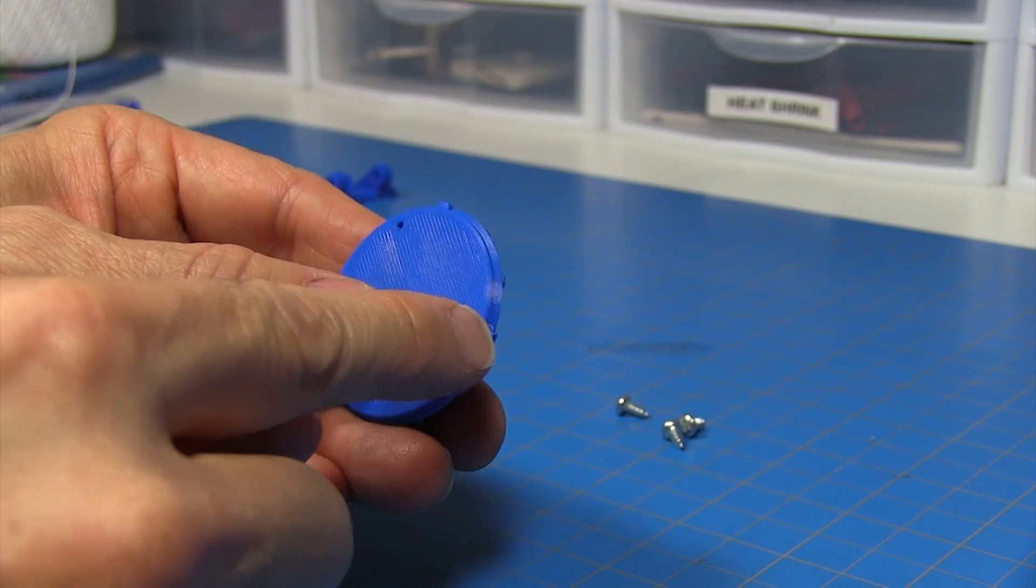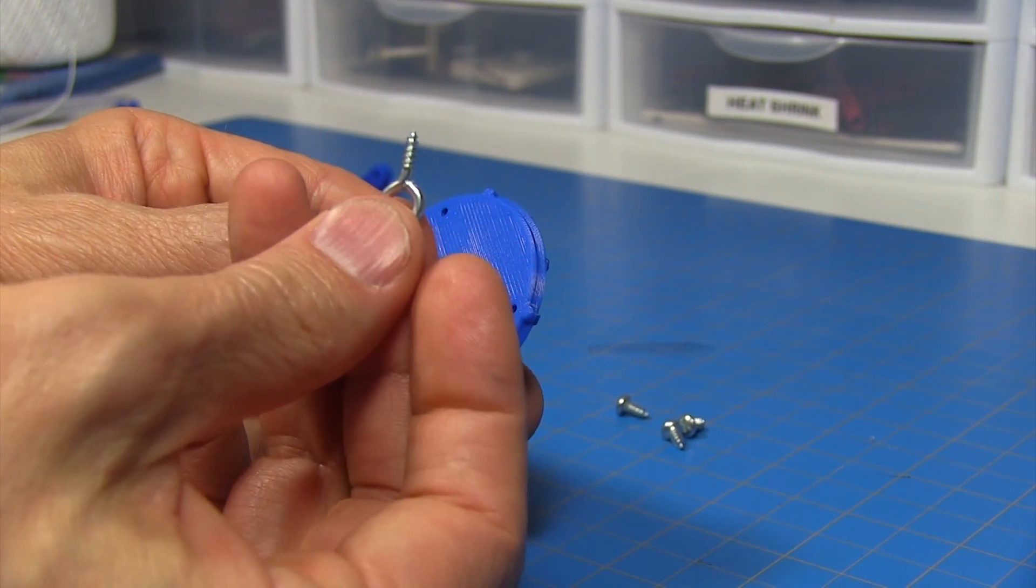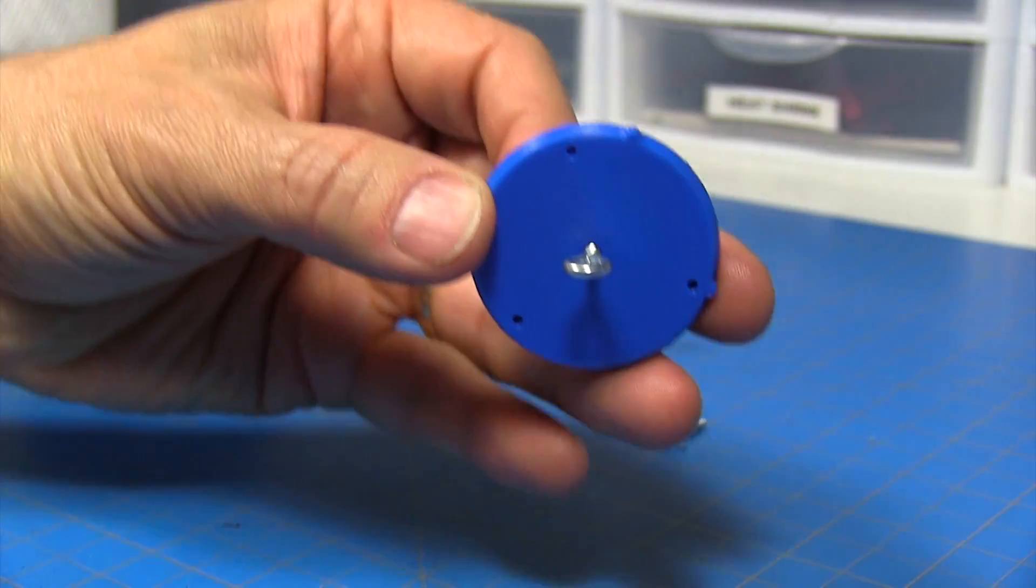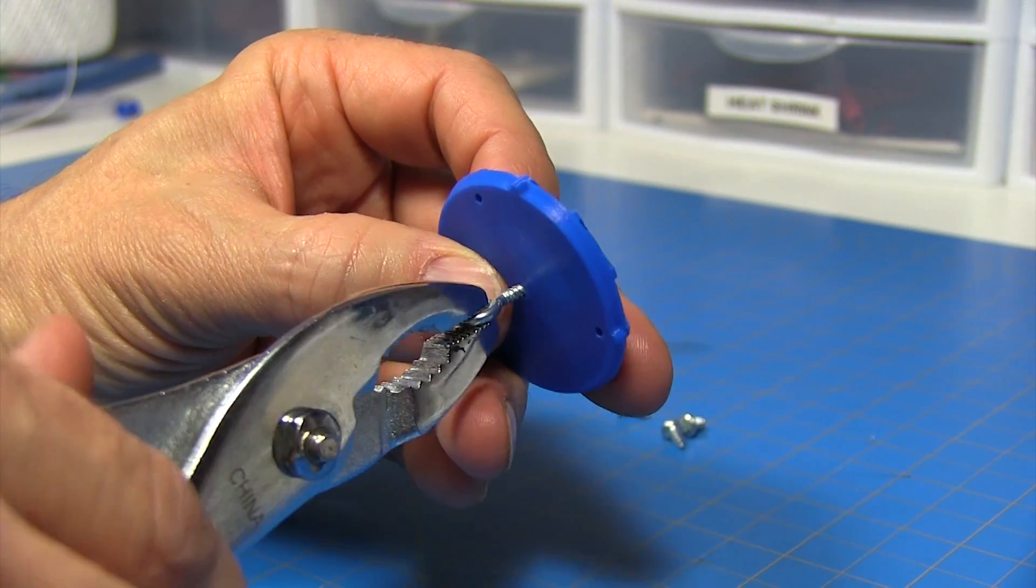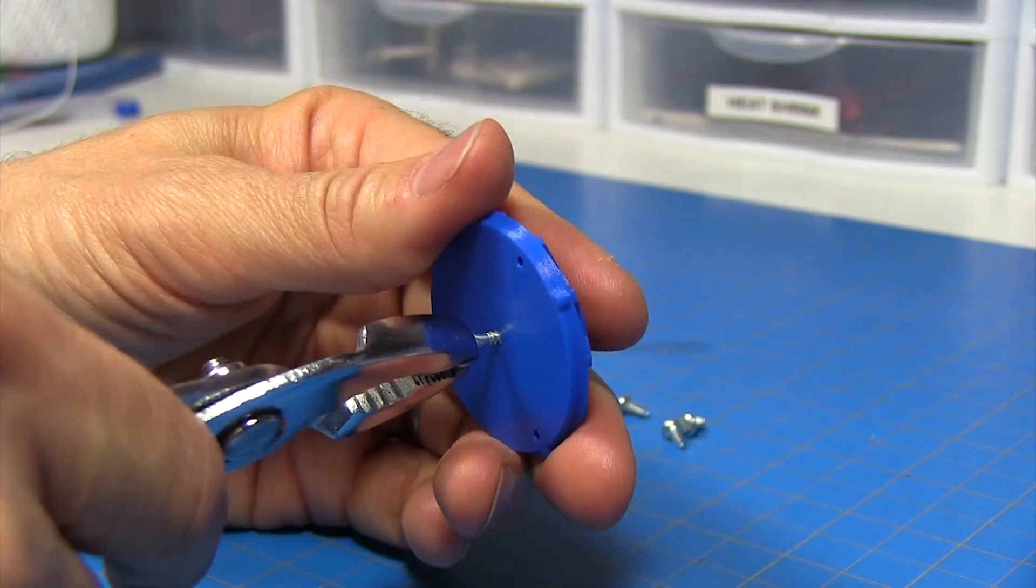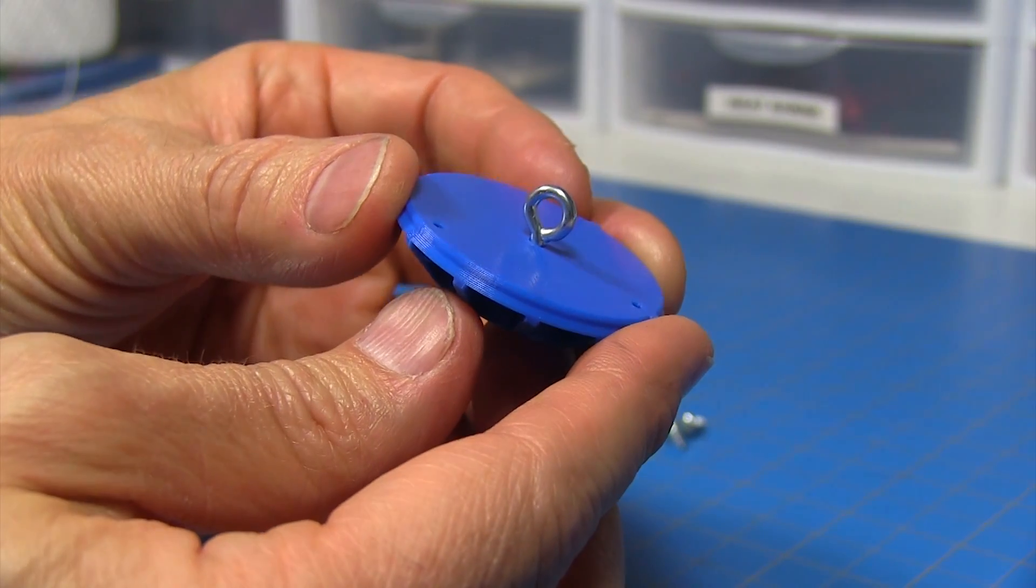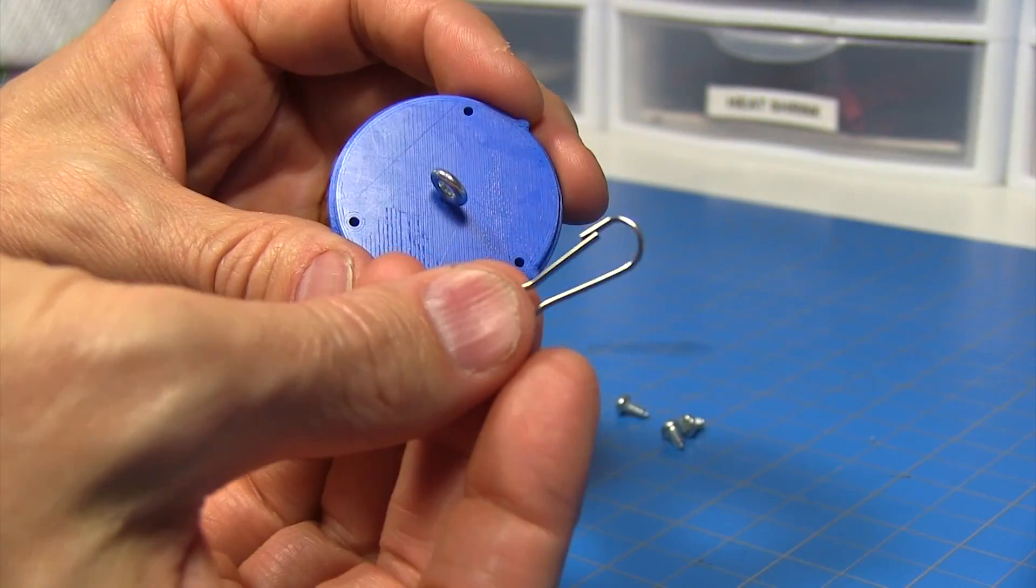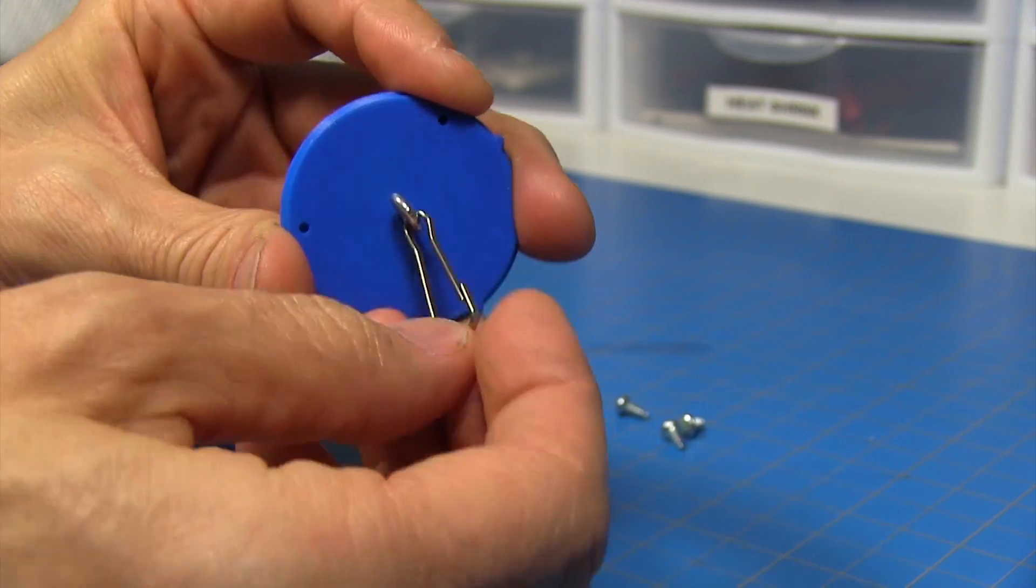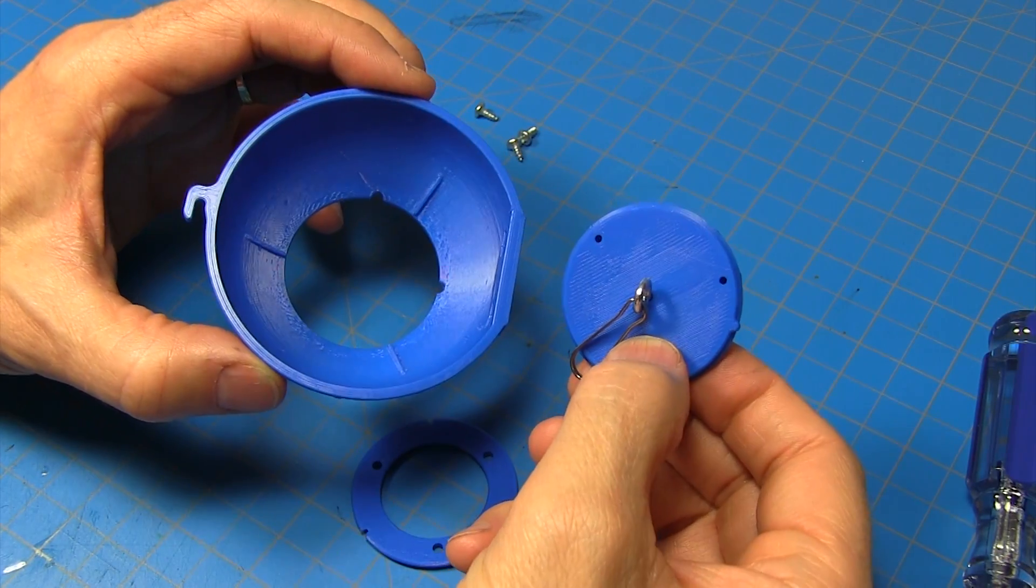Now for the cap piece that has the two tabs and the hole in the center, we're going to install the screw eye. Put that right into the hole and then using a pair of pliers, twist it until we can't see the threads anymore. Then we'll take our little metal clasp and attach it to the screw eye like that. Now we can install this cap in the housing.